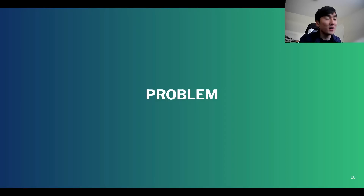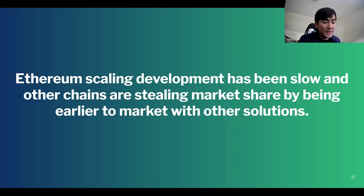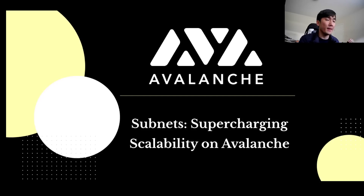I could be wrong on the details, but obviously there are problems with ZK rollups and Ethereum scaling in general in that it's taking way too long. I totally understand why — there are billions of TVL and they have to be careful. But the problem is that while Ethereum is scaling, other smart contract platforms are going to ship faster and be earlier to market with their own solutions, and in theory should take way more market share away from Ethereum. My thesis for last year and this year is that yes we like Ethereum, but other chains will just grow faster.